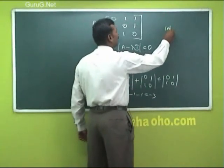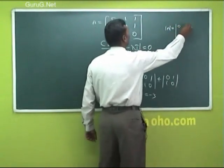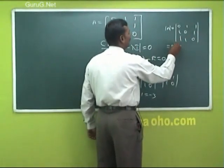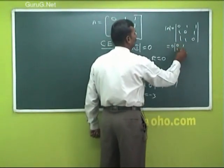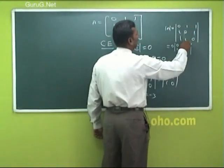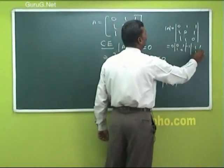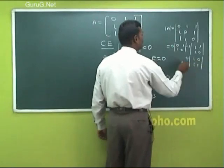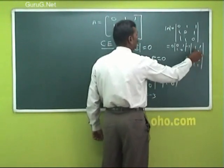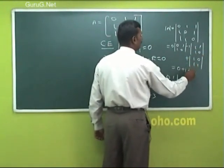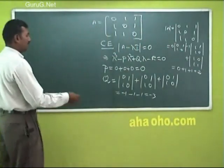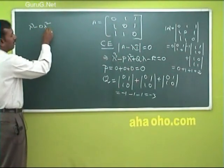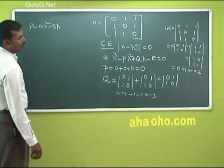Now the determinant of A. So determinant of A: expanding along the first row with elements 0, 1, 1 — we get 0 times the minor, minus 1 times the minor of the second element, plus the next term. Simplifying it gives 2. So R equals 2. The characteristic equation is: lambda cubed minus 0 lambda squared minus 3 lambda minus 2 equal to 0.